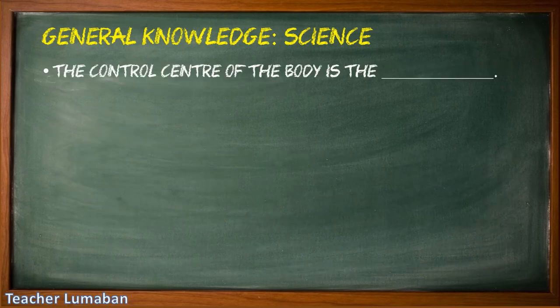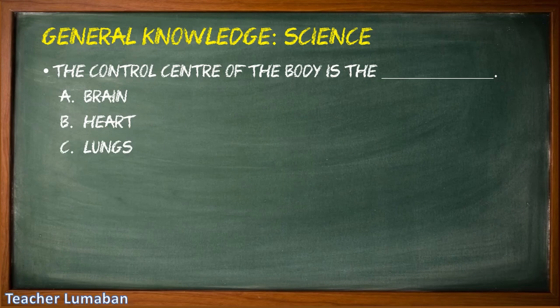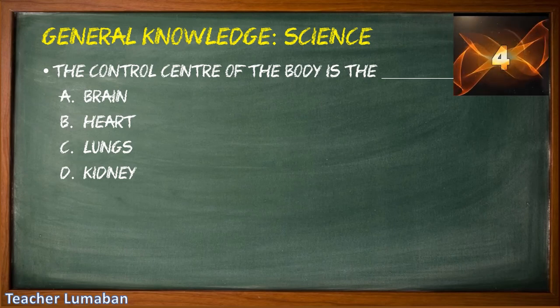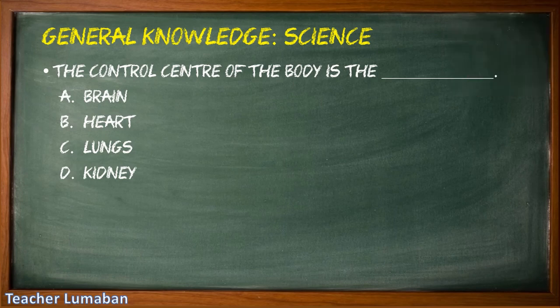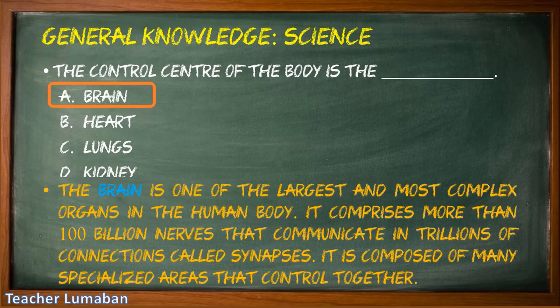The control center of the body is blank. Letter A: brain, Letter B: heart, Letter C: lungs, Letter D: kidney. The correct answer is Letter A: brain. The control center of the body is the brain. The brain is one of the largest and most complex organs in the human body. It comprises more than 100 billion nerves that communicate in trillions of connections called synapses. It is composed of many specialized areas that work together.